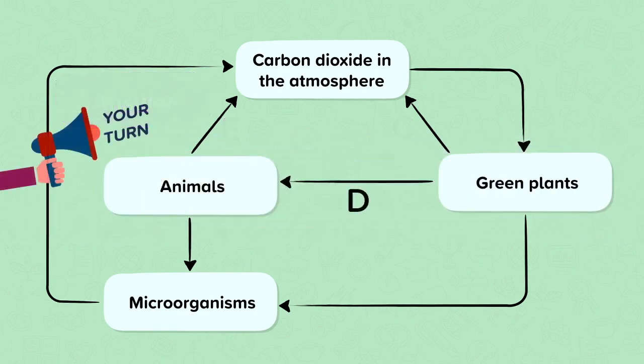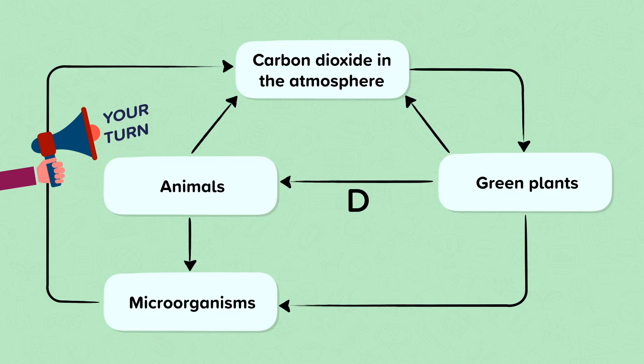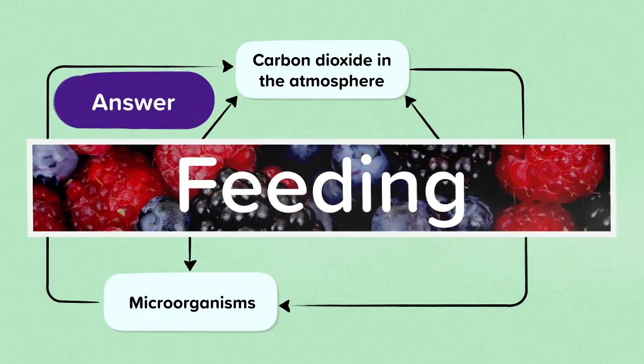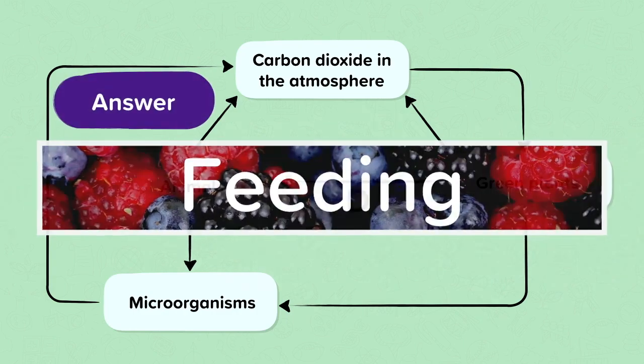D is going from green plants to animals. This is feeding — you could also say eating or consumption.